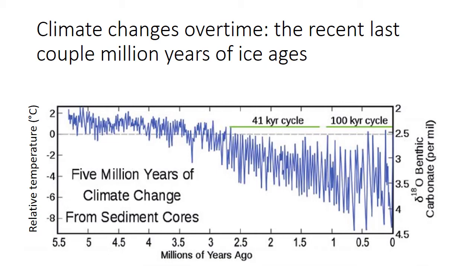Temperature proxies are things usually found in sediments that tend to vary very reliably with changes in temperature. In this case, we're looking at oxygen isotope content — the amount of the heavy oxygen isotope found in carbonate in the sediments. This is known from first principles and from empirical evidence to correlate strongly with temperature. So by looking at sediments over time, we can get a pretty accurate estimate of what the temperature changes have been like.